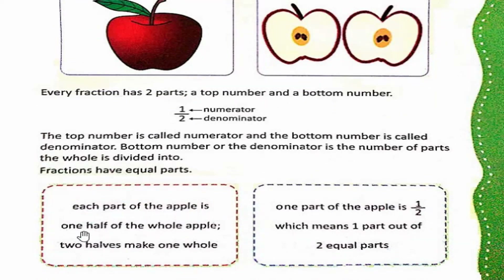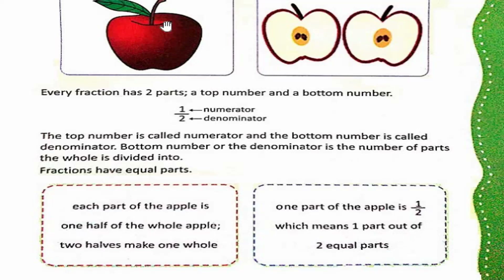Each part of the apple is one half of the whole apple. Two halves make one whole. One part of the apple is one by two, which means one part out of two equal parts. Whole apple ko agar hum dho hisson mein taqseem karein, toh uske dho part bante hain aur dono part milkar one whole apple bante hain. Total parts ko hum denominator kehte hain, aur agar hum apple ka ek hissah lenge, toh hum is fraction ko one by two likhenge.